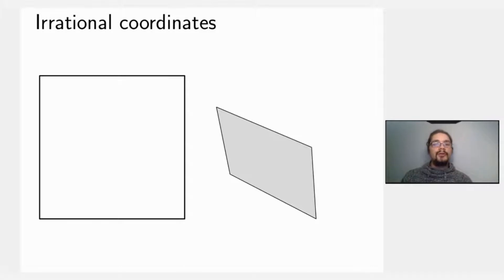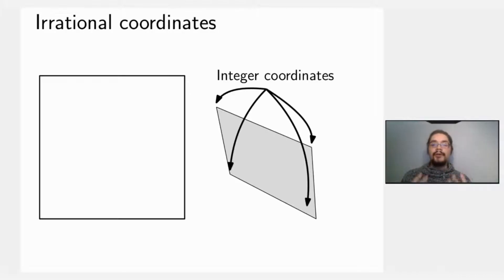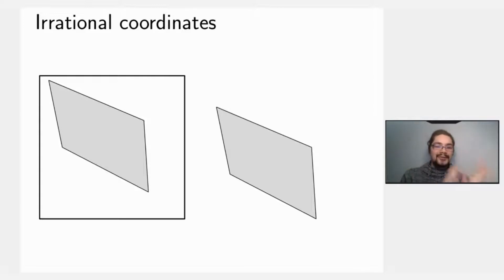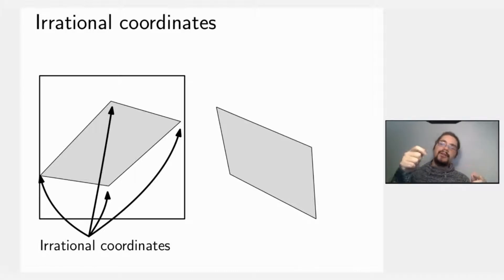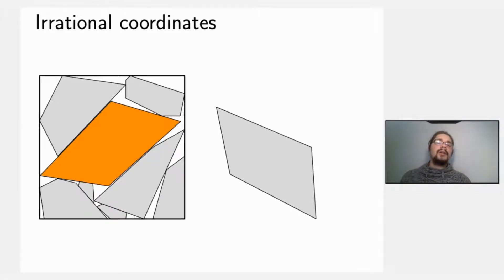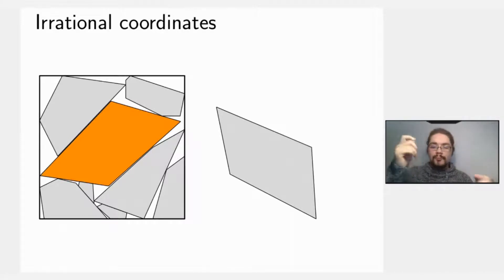Another issue that usually doesn't appear in geometric knapsack problems is irrational coordinates. Even though we start with integer coordinates, and after translation coordinates remain nice, once we rotate the polygons the coordinates become irrational and very strange. One might think to avoid this by wiggling the polygon slightly, but it could be locked up by other polygons in the optimal solution, so this wiggling strategy cannot be applied a priori.